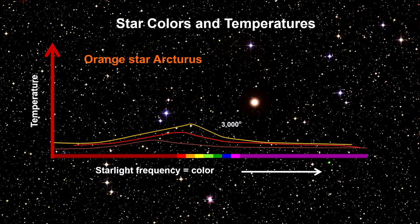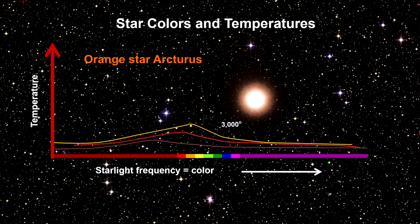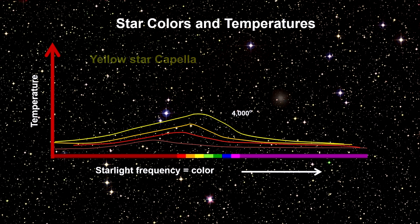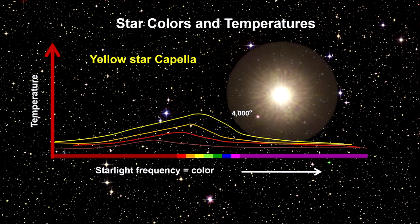By 3,000 degrees, the red has morphed to orange. Arcturus is an example of this. By 4,000 degrees, it is quite yellow. Capella and our own sun are yellow.